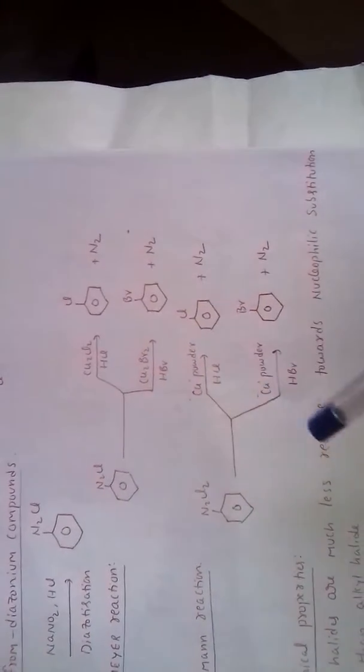Because here the catalyst is in ionic form, whereas here it's in elemental form. Ions are more reactive than elements. So yield in Sandmeyer reaction is always higher than Gutterman reaction.